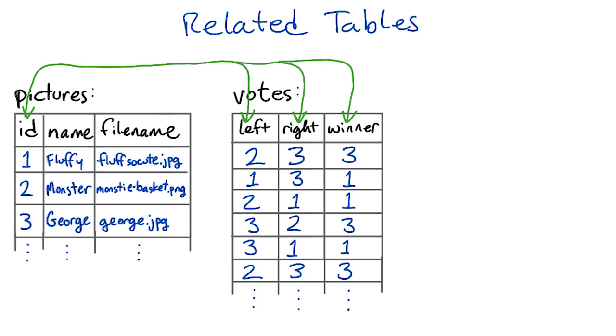You can read every row as a sentence. In the pictures table, the sentences say Fluffy has ID number 1 and the file name FluffSoCute.jpg, Monster has ID number 2 and file name Monstie-basket.png, and so forth.